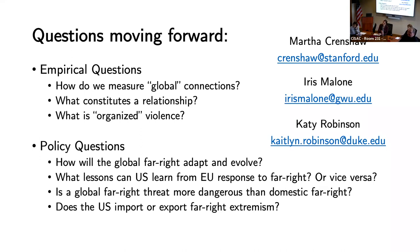I'm going to admit my question might come from a very teleological way of thinking, but I was wondering if what you're presenting is just a snapshot of where the far right is right now. Especially thinking in terms of Islamist groups, they have had enough time to evolve in a way that made their connections much easier to map out. I wonder if, especially given your policy question about how the global far right will adapt and evolve, can we expect these different far right groups to be more connected in the future, because they may be too nascent yet?